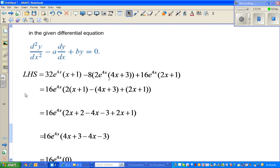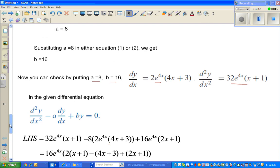So 32—this is your second derivative, which is 32e^(4x)(x+1)—minus a, which is 8, times the first derivative, which is 2e^(4x)(4x+3), plus b, which is 16, times y, which you already know is e^(4x)(2x+1).